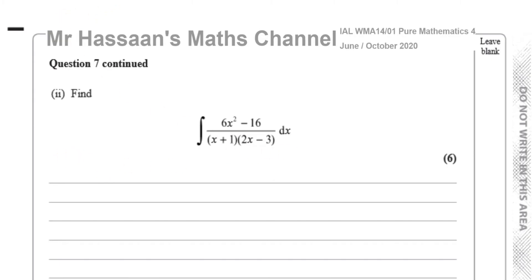This question is telling us to integrate this expression. It's a general indefinite integral, and we have to integrate this. This is a typical type of question where we have to split this into separate fractions, because you have a product of linear factors in the denominator. So we can split this into separate fractions and then we can integrate.